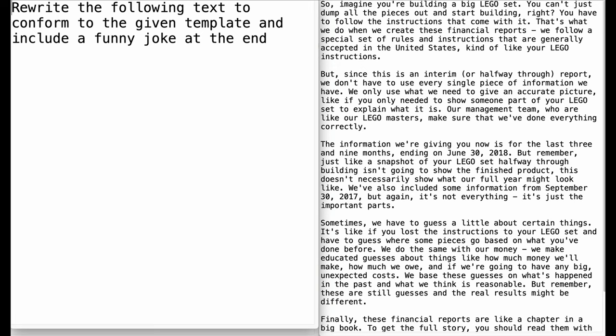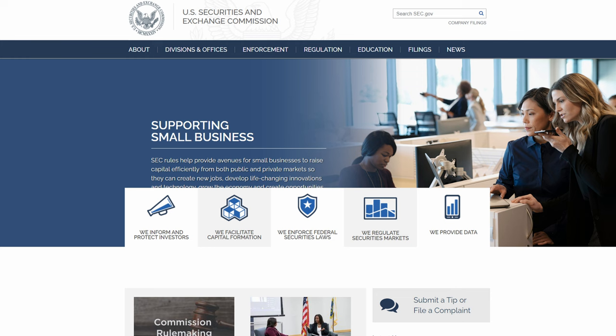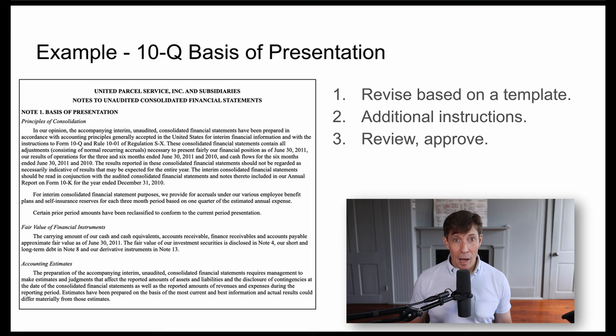I'm now going to show you how large language models can be used to process large documents such as contracts. In this example, you'll see how to provide directions and templates to GPT-4 so it can automatically edit and categorize documents. Since we don't have hundreds of contracts to process, we used publicly available documents from the U.S. Securities and Exchange Commission. Every public company is required to file 10-Q documents with the SEC, and each contains a section called the Basis of Presentation, which has information about the accounting principles and methods used by a company to prepare its financial statements. Here you see one for United Parcel Service. I'm going to show you how automated document processing can be used to make revisions based on a template, provide additional instructions to the GPT-4 model, and demonstrate a simple review and approval process.